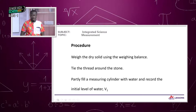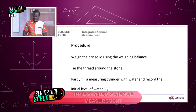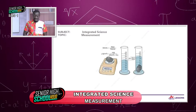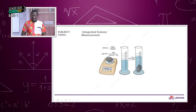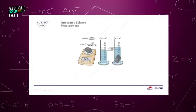We are going to have two volumes, V1 and V2, to help us determine the density of this irregular object. We partly filled the measuring cylinder with water and recorded the volume as V1. Then we gently dropped the stone in, and the level of the water rose, giving us V2. Our scale also gives us the mass of the irregular object.